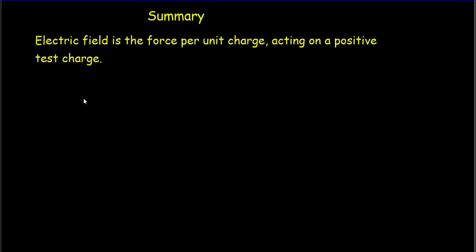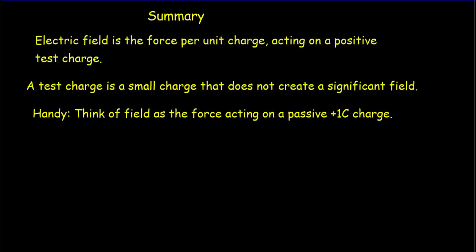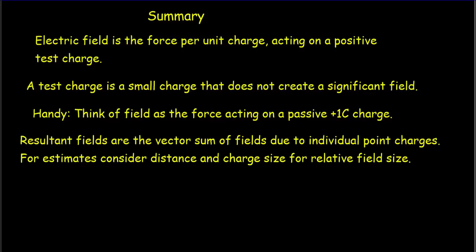In summary: the electric field is the force per unit charge acting on a positive test charge. A test charge is a small charge that does not create a significant field. It's very handy to think of the field as the force acting on a passive positive one coulomb charge. If we want to estimate resultant fields, they are simply the vector sum of the fields due to the individual point charges — considering both the distance from the point to the charge and the size of the charge itself.